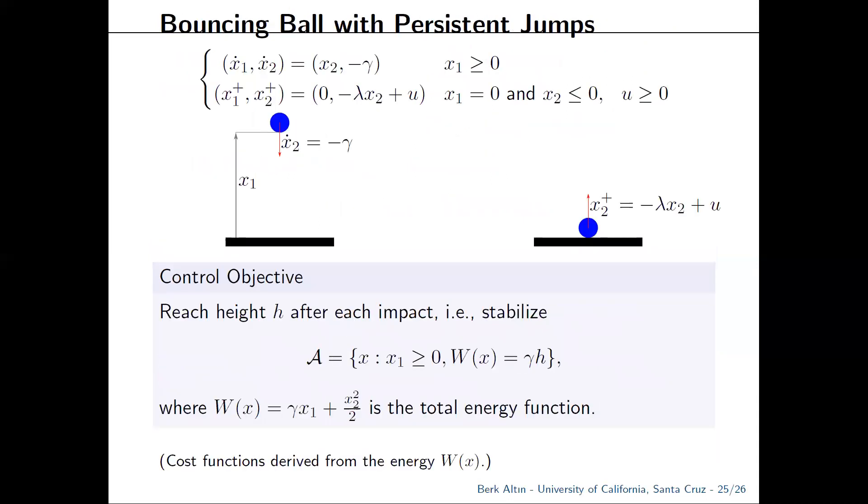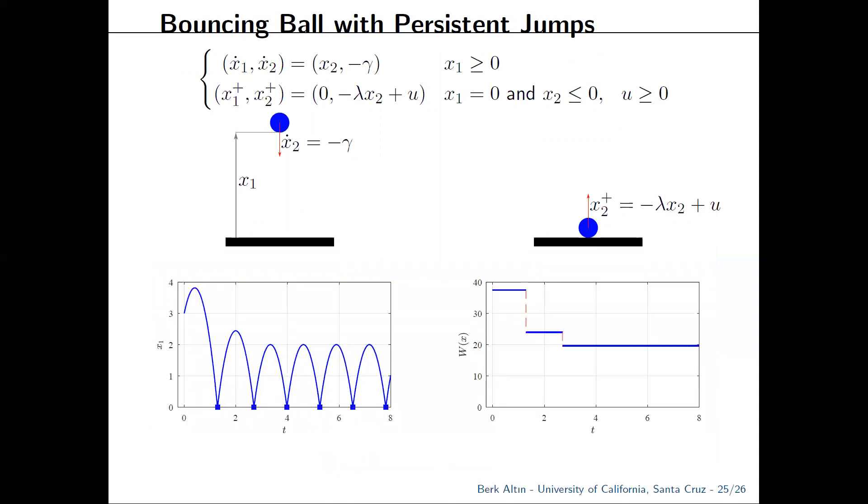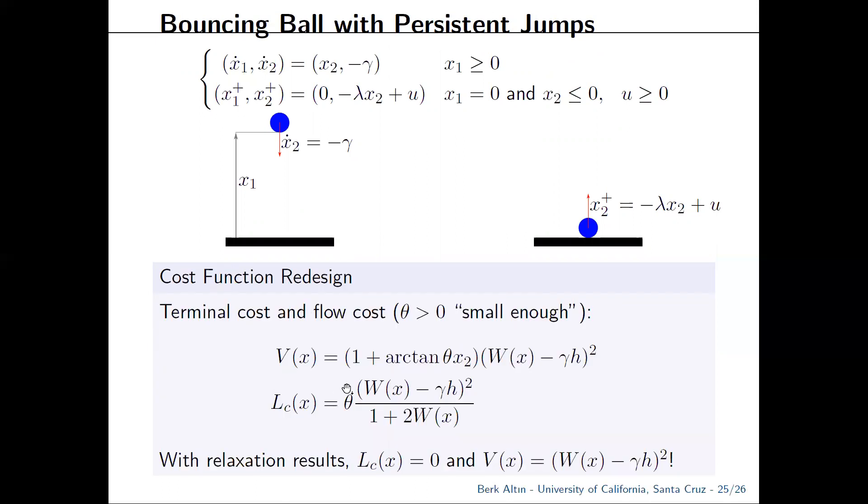Okay, so back to the bouncing ball with this new perspective. We redesigned the cost functions using these new results. And lo and behold, the closed-loop response is actually the same. So originally, we had designed our cost functions using a parameter theta, which made things a bit intractable and messy. The jump cost is even more involved and complicated, so I haven't included it here. But the moral of the story is that with the new results, we can just get rid of that parameter, take the flow cost as zero, and for the terminal cost, we also have a much more natural design. The set we wanted to stabilize was the gamma h level set of the total energy, so we simply take V as a square of w minus gamma h.